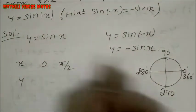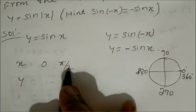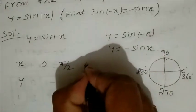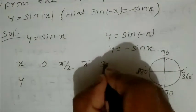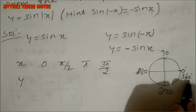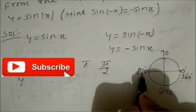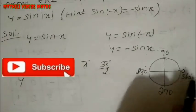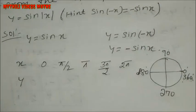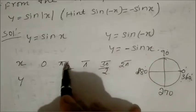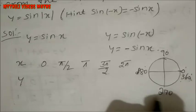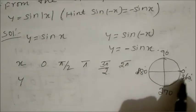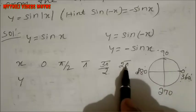In the table column: x-axis is 0, then π/2 which is 90 degrees, then π which is 180 degrees, then 3π/2 which is 270 degrees, and finally 2π which is 360 degrees — that is 2 into π.